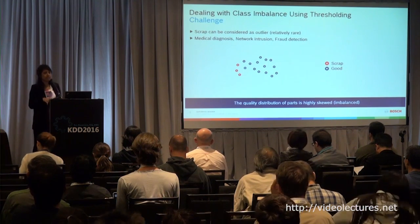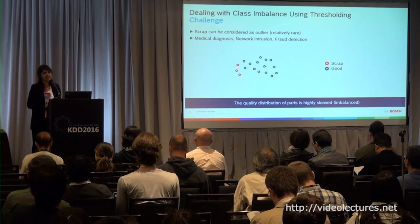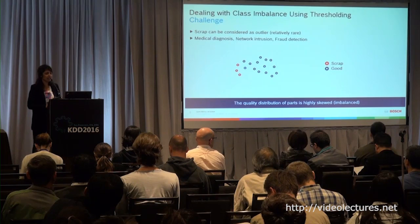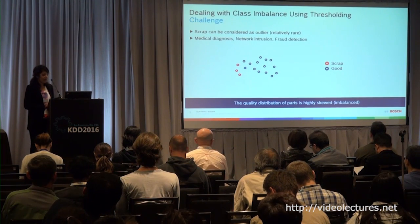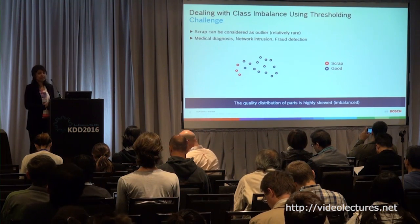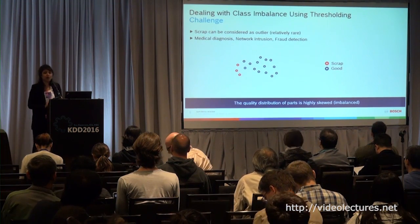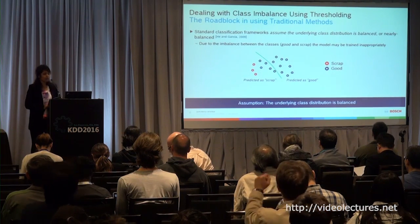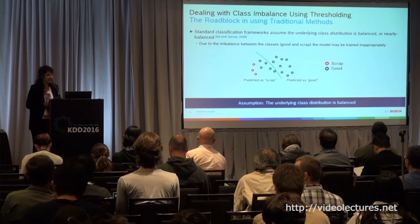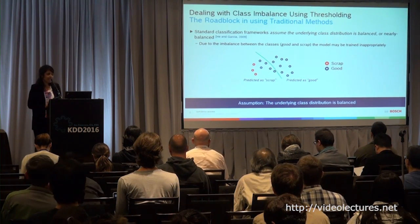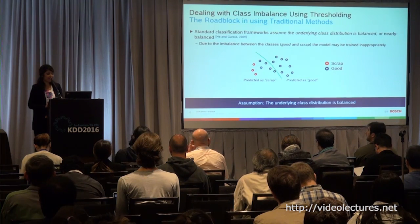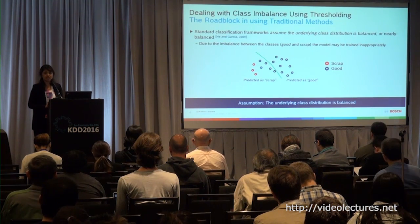I'm speaking of a particular use case from manufacturing, but it's not just true in manufacturing. Take medical diagnosis, network intrusion, fraud detection, and so on. In all these scenarios, you have two different kinds of labels and one of them is highly skewed. This is the kind of problem we wanted to solve. So why can't we just use a traditional binary classification method? The inherent assumption in most traditional methods is that the underlying class distribution is balanced.